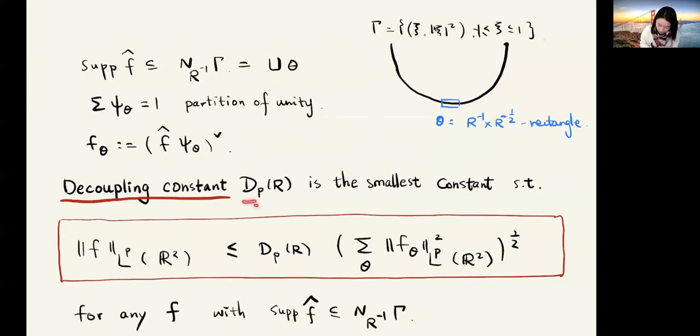The decoupling constant d_p(r) is defined as the smallest constant such that the L^p norm of f is bounded by d_p(r) times the little l^2 sum of the L^p norms of f_theta, for any f with Fourier transform supported on the thin neighborhood of the parabola. This decoupling inequality gives a formula for estimating the L^p norm of f, and it turns out to be very useful.